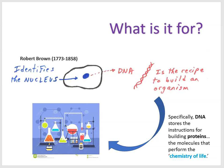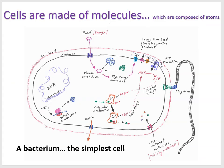Here we see a cartoon cell — one of the simplest kinds of cells on Earth, a bacterium. These cartoon molecules show what cells are made of: molecules composed of atoms chemically bonded together. All cells have a membrane boundary; some have a cell wall. Bacteria and plant cells can have cell walls, but animals don't. The other structures inside are large molecules called proteins, performing different chemical reactions.